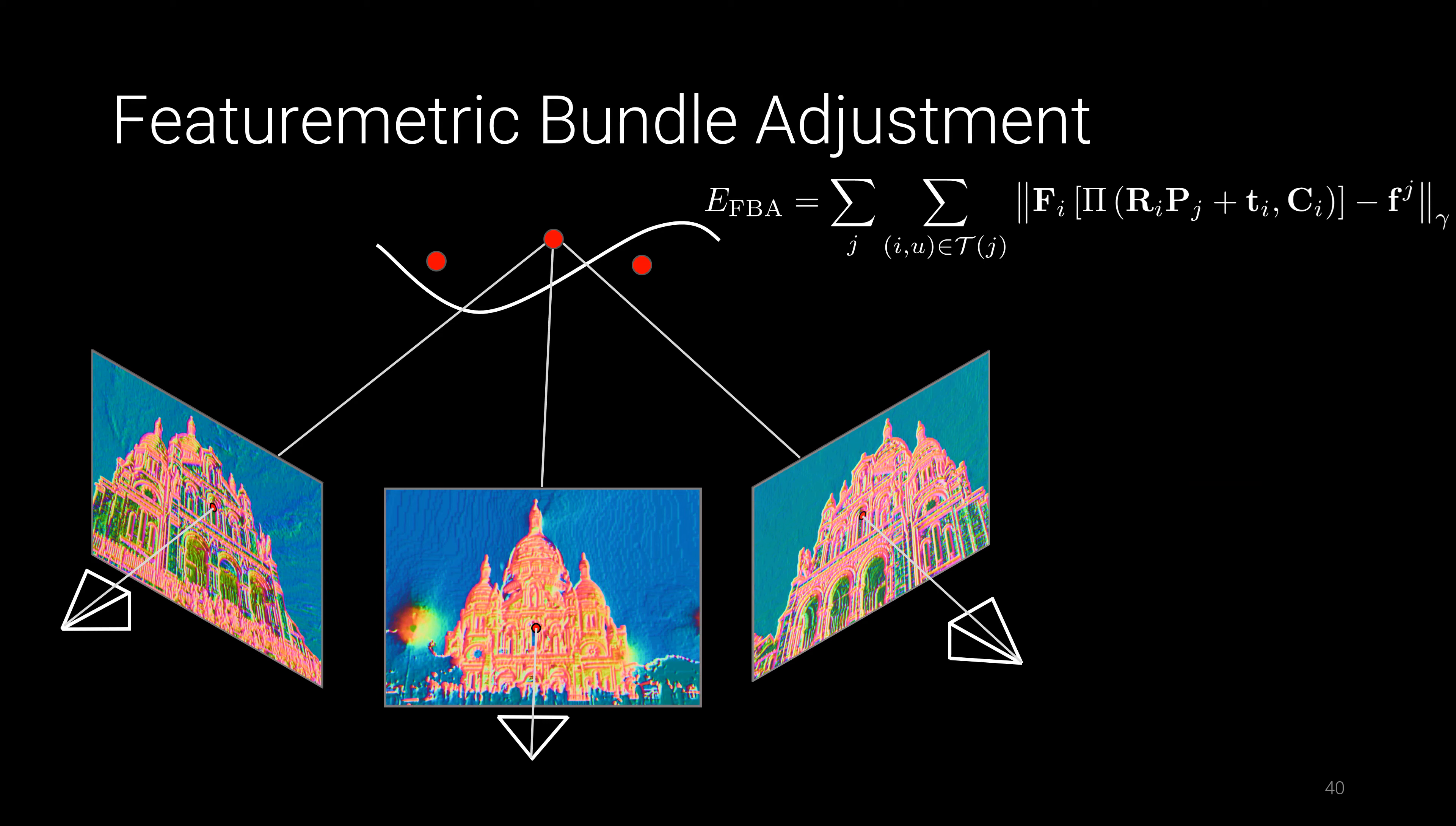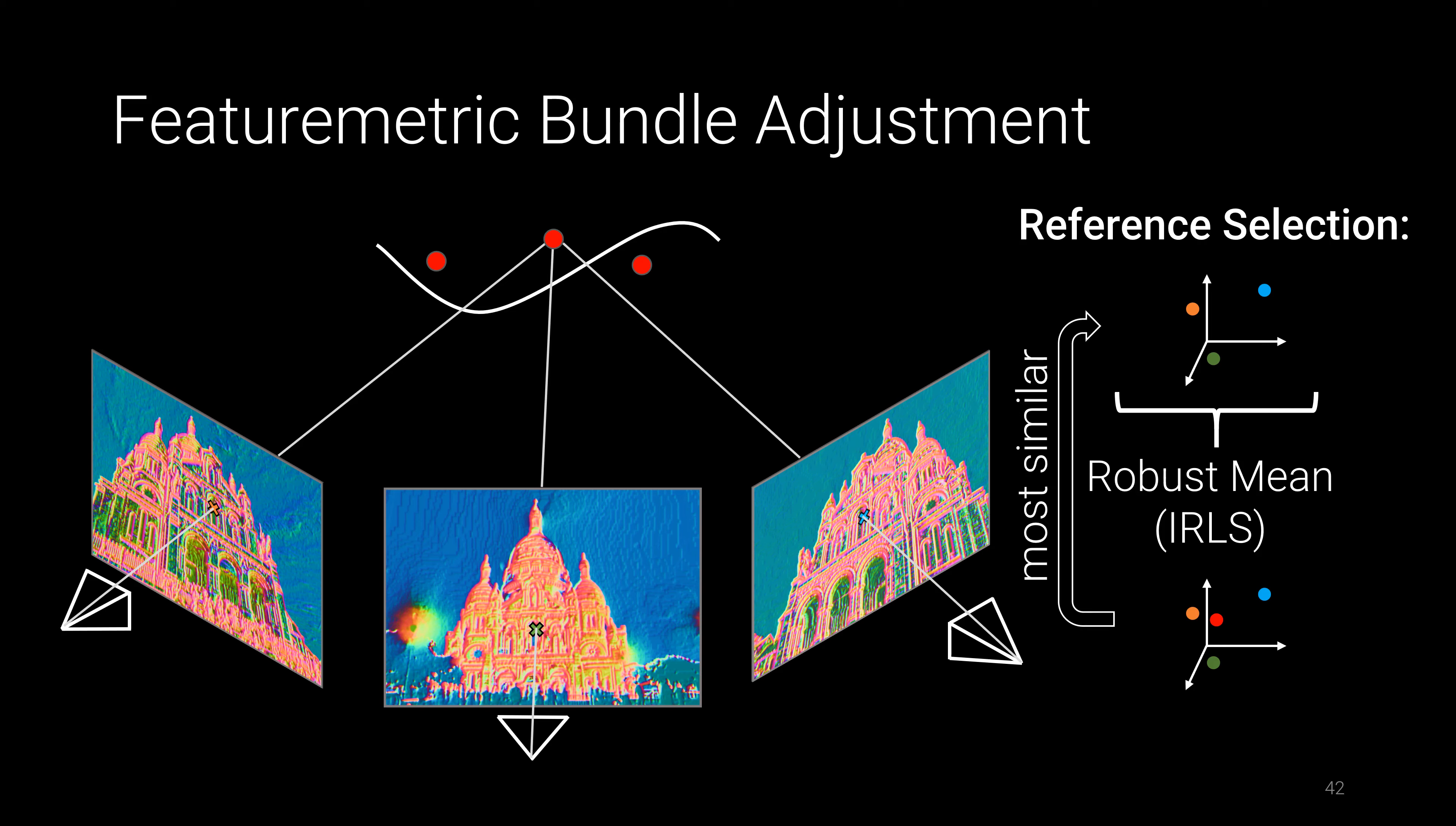It takes as input a sparse 3D reconstruction obtained from structure from motion. To estimate a reference descriptor for each track, we first interpolate the feature maps at the current reprojection locations and compute the robust mean using iteratively weighted least squares. The interpolated descriptor most similar to the robust mean is selected as the reference for this track and remains fixed during optimization.